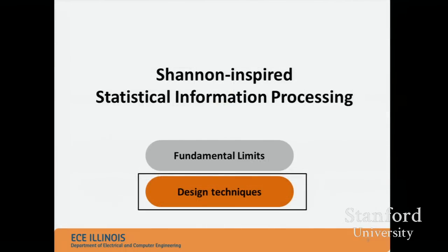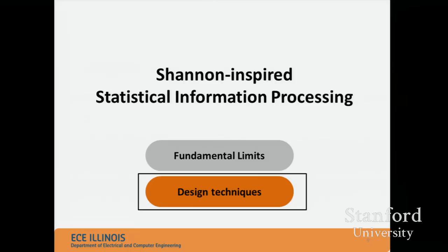That raises the question: how do we remove that transition? Is there any value in processing information differently — in the Shannon style of data transmission? If there is value, how do we show it and what are the trade-offs? In the rest of my talk, I'll describe what I call statistical information processing rather than computing. I believe that modern-day systems are all about information processing and information extraction — that's the kind of system we want to build.